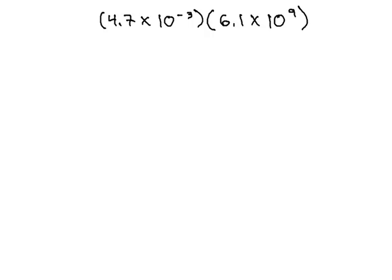We know that when multiplying with scientific notation, we can multiply the front numbers together. Let's do that first, 4.7 times 6.1, which comes out to 28.67.